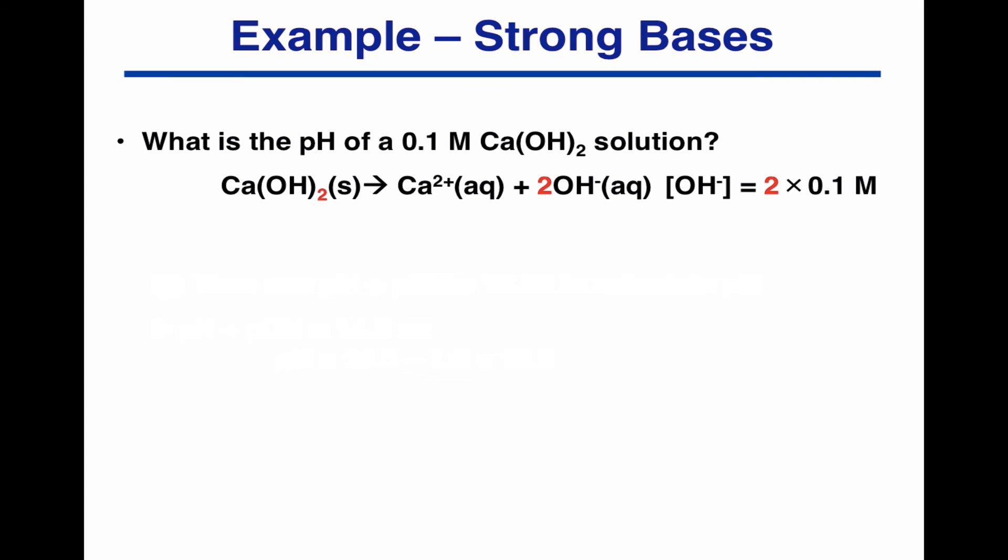So from there, we work out the OH minus concentration is 0.2 molar. So the pOH is minus log to the base 10 of 0.2, which is 0.7.